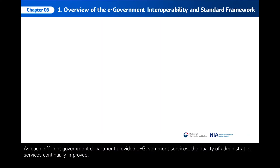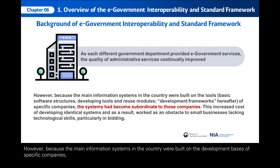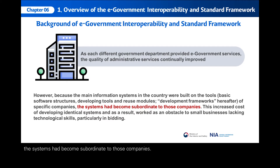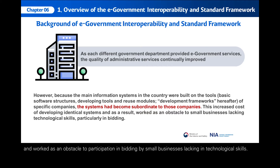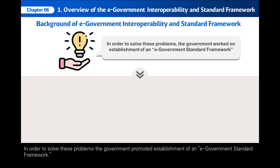As each different government department provided e-government services, the quality of administrative services continually improved. However, because the main information systems in the country were built on the development basis of specific companies, the systems had become subordinate to those companies. It had led to increases in cost due to developments of identical systems and worked as an obstacle to participation in bidding by small businesses lacking in technological skills. In order to solve these problems, the government promoted establishment of an e-government standard framework.